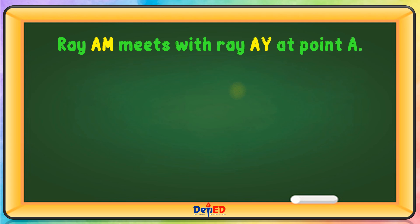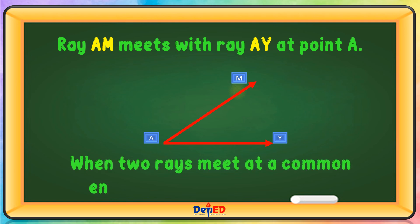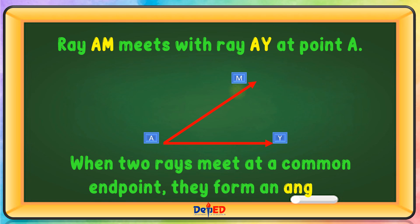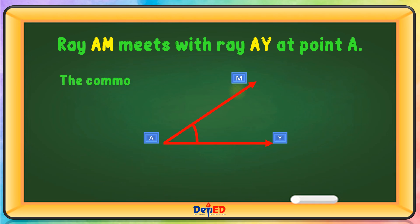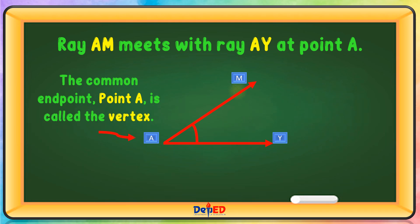Ray A-M meets with Ray A-Y at point A. When two rays meet at a common endpoint, they form an angle. The common endpoint, point A, is called the vertex.